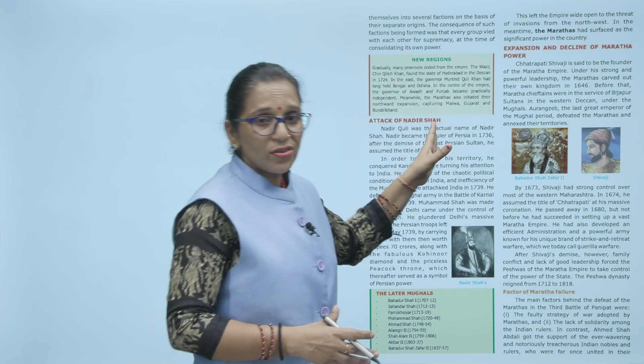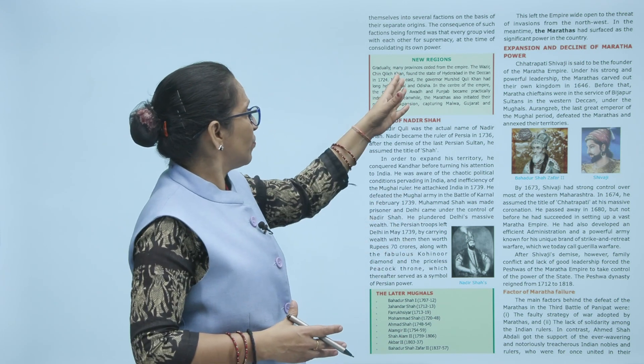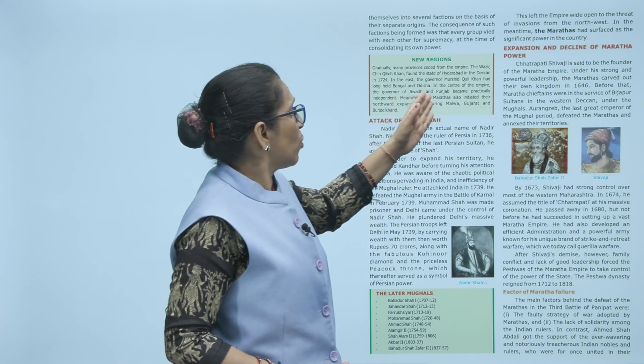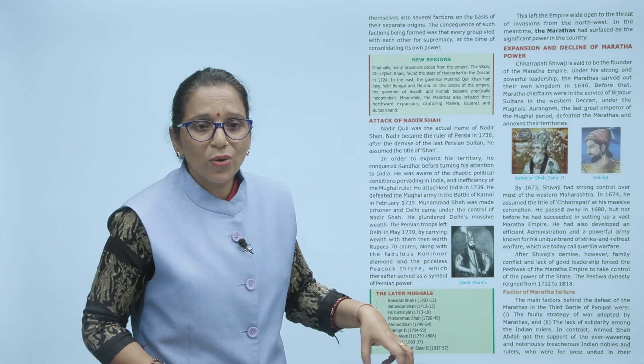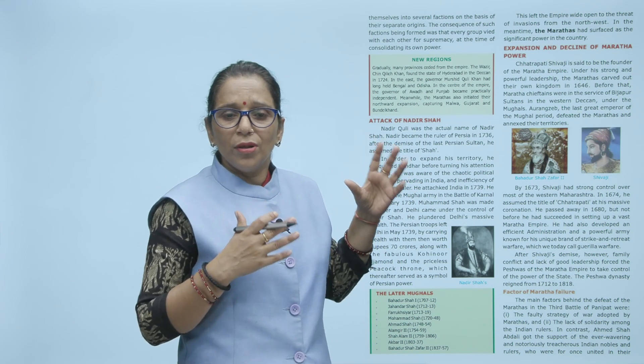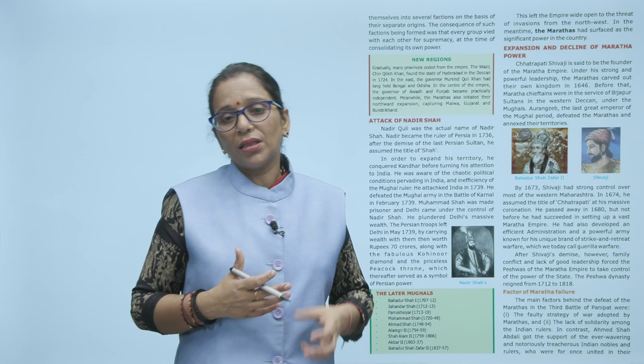Gradually many provinces seceded from the empire. The wazir Chin Qilich Khan founded the state of Hyderabad. Jo raja kamzor pada, to nobles, mantri, jagirdars — jinko area diya hua tha — unhone khud ko independent declare kar liya. In the east, governor Murshid Quli Khan held Bengal and Odisha. In the center, the governor of Awadh and Punjab also became practically independent. Meanwhile, the Marathas also initiated their northward expansion and were growing more powerful.